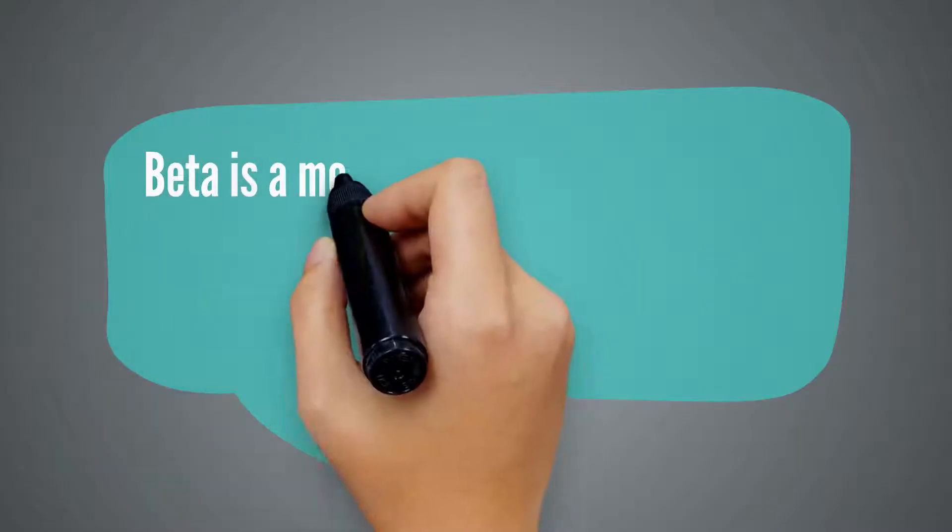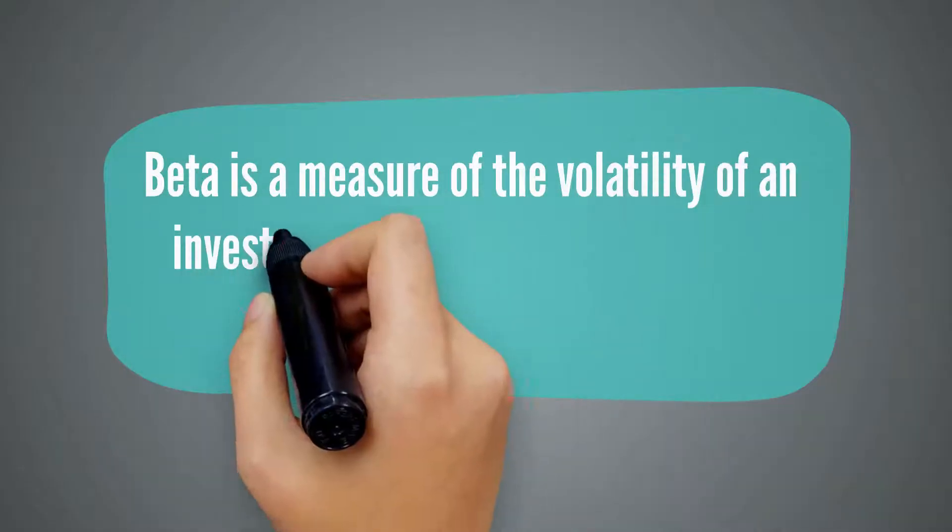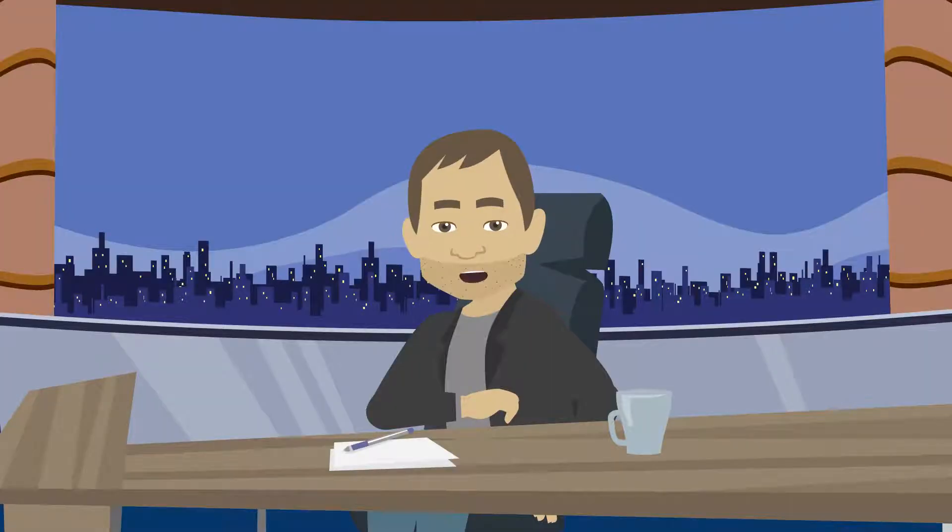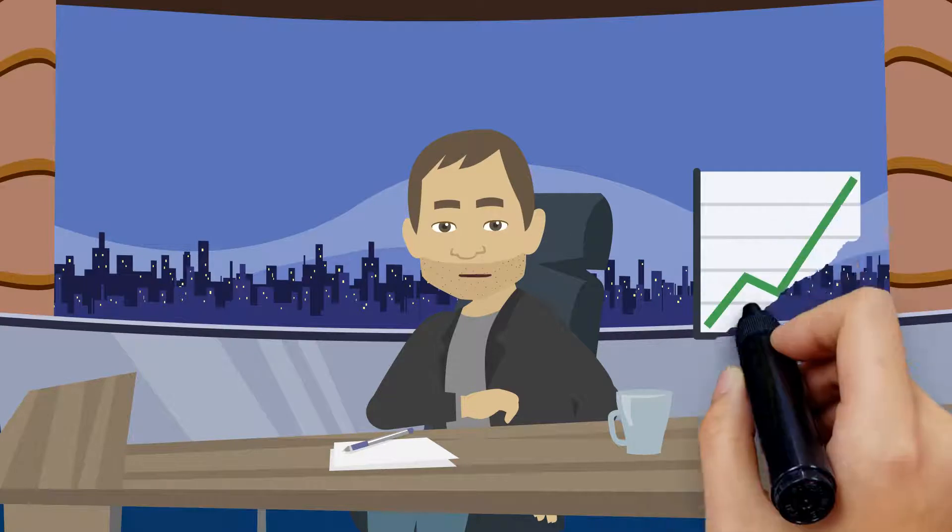So what's beta? Beta is a measure of volatility of an investment in relation to that of the market as a whole. By calculating beta, we can see if our investments are more or less volatile than the market and decide whether it's appropriate for us.